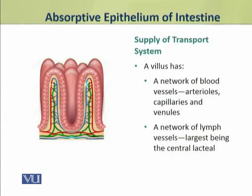Now we shall discuss the supply of transport system to the villi and to the small intestine. A villus has a network of blood vessels inside it. These blood vessels consist of arterioles, capillaries, and venules.